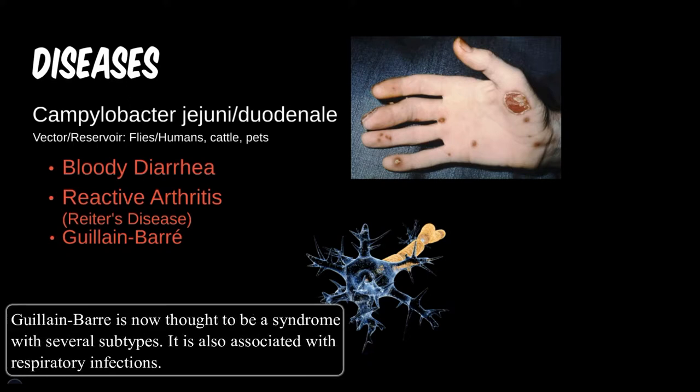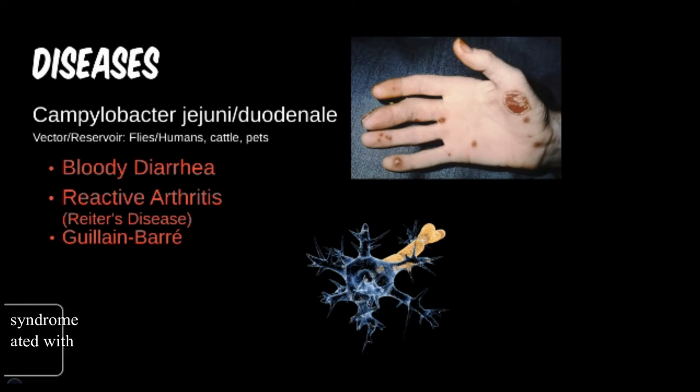Guillain-Barré is an autoimmune reaction that causes paralysis beginning at the feet and slowly working its way up the body. Usually this is self-limiting or may be treated for moderate symptoms. However, in severe disease, it can cause paralysis of the lungs and require hospitalization.